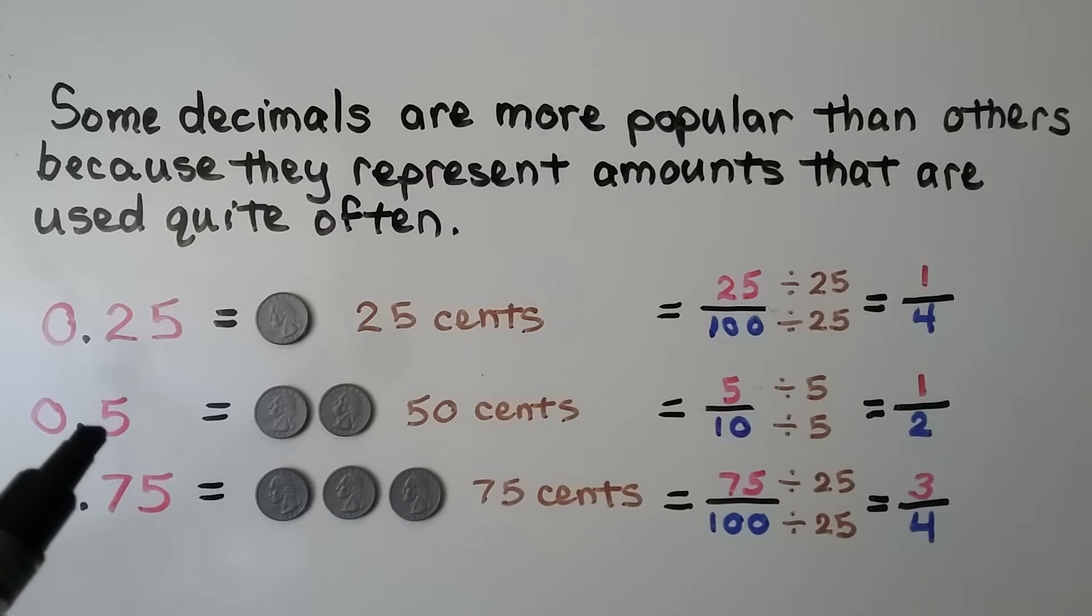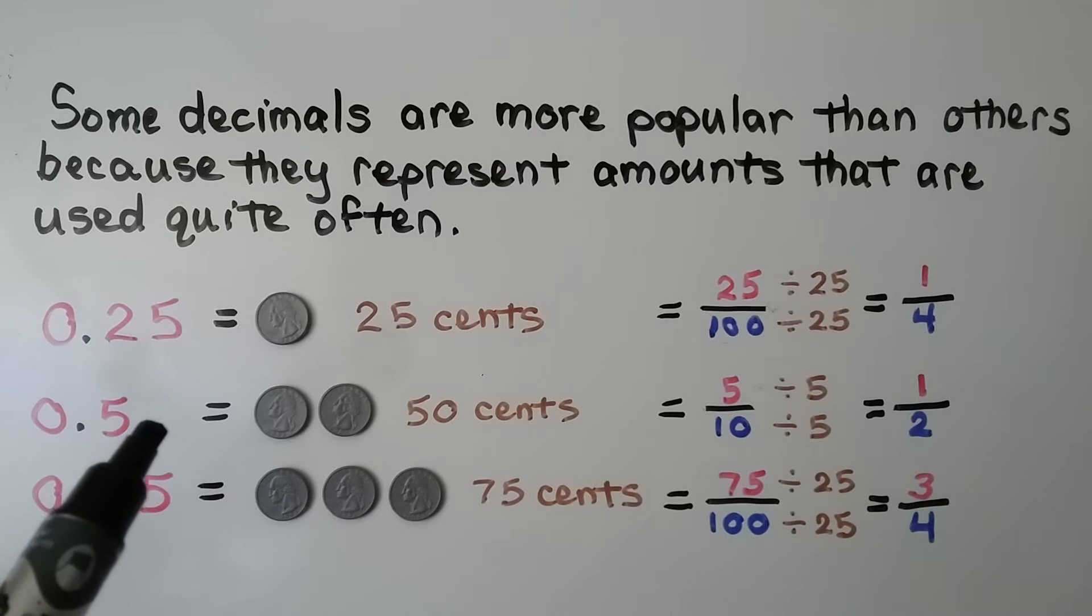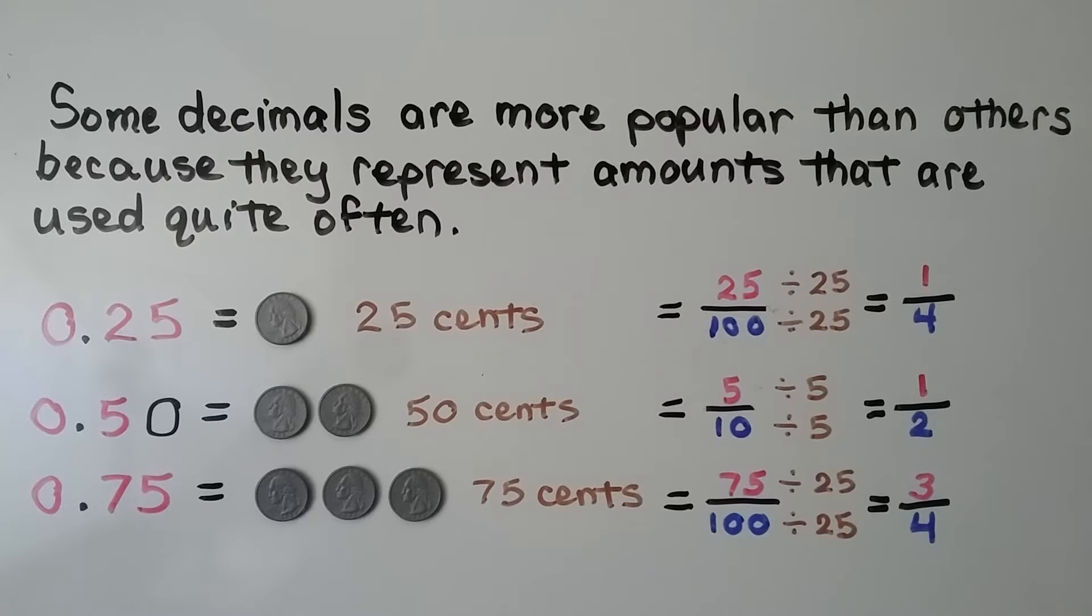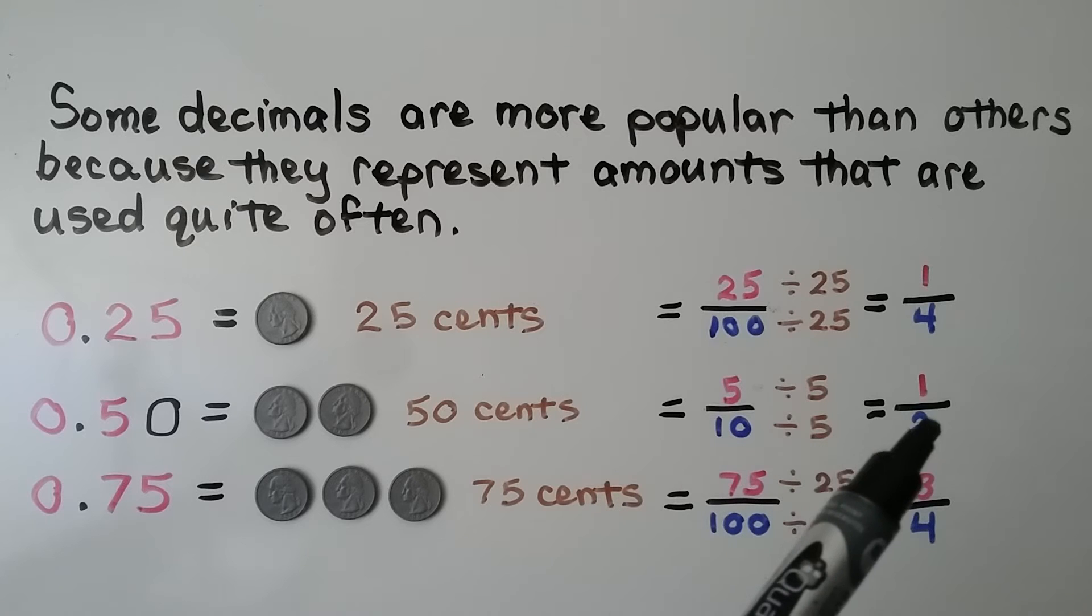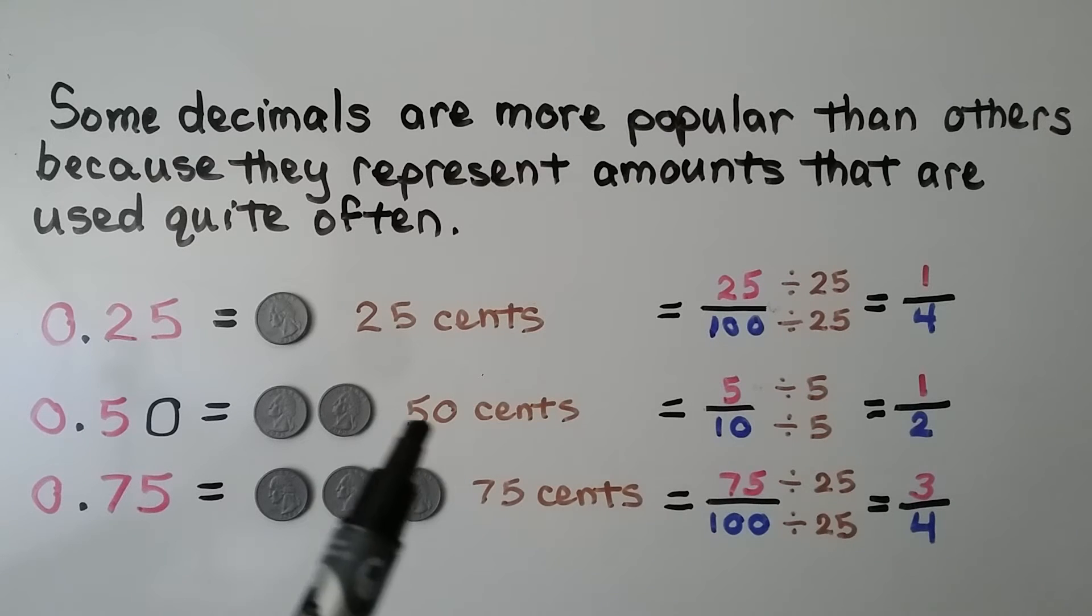Here we have 5 tenths. We can put a trailing zero here. That would be like 50 cents. 5 tenths is equal to 1 half. 50 hundredths is equal to half of a dollar.